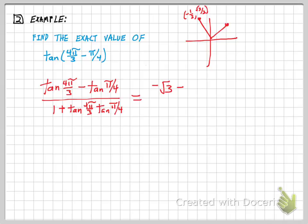π/4 is a little bit easier because the sine and the cosine are the same, and so the tangent is 1. That's one you should be able to get pretty quick. And then on the bottom, I'm going to have 1 plus the same two values, negative root 3, but this time I'm multiplying them times 1. So your final answer is going to be negative root 3 minus 1 all over 1 minus root 3.